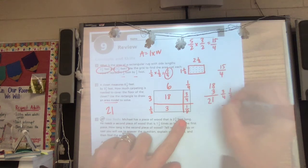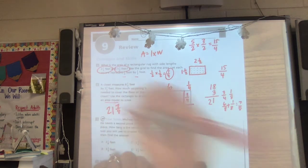And then we need to add our three fourths and our one eighth. Well, I know three fourths is equivalent to six eighths. Four times two is eight. Three times two is six. So that would be seven eighths. 21 and seven eighths.